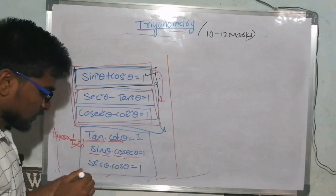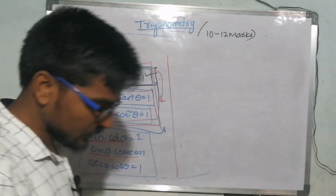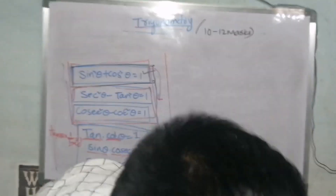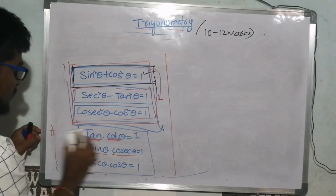So, this covers 3 math identities, guys. I will show you 3 examples. Let me show you some examples.